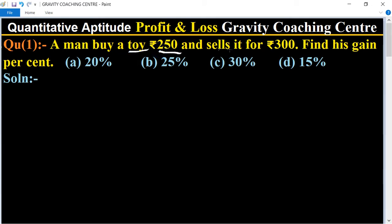Here, the cost of the toy is 250 rupees and he sells it for 300. So given: CP of toy equals rupees 250, and its selling price SP equals rupees 300.